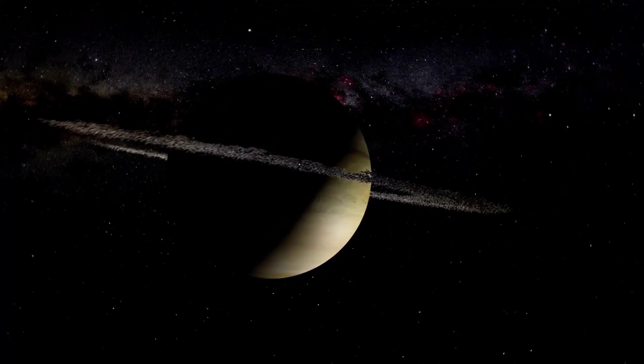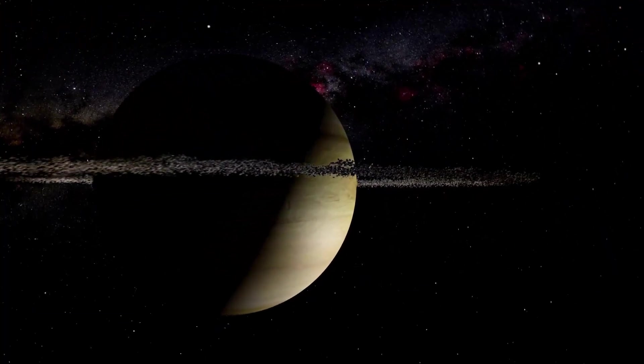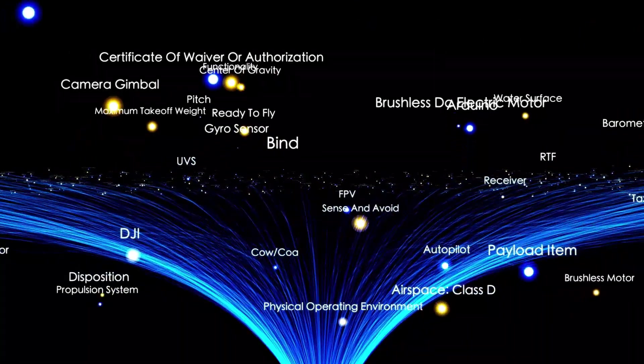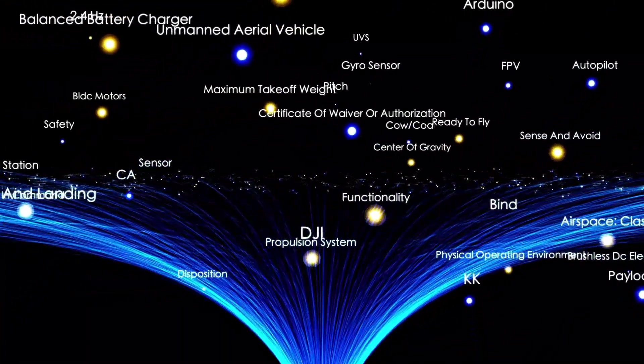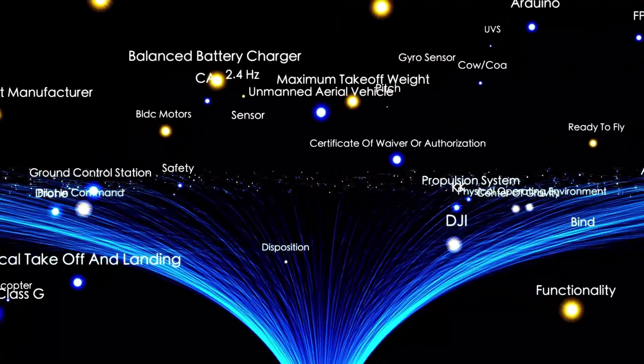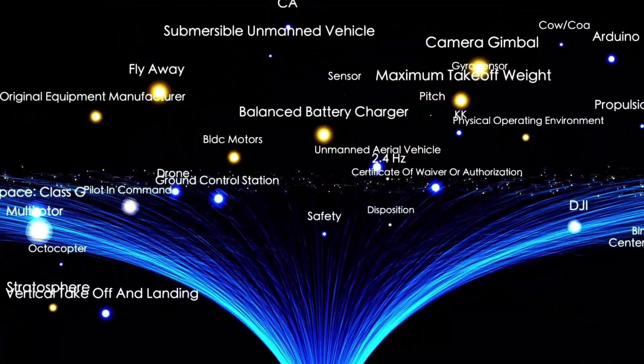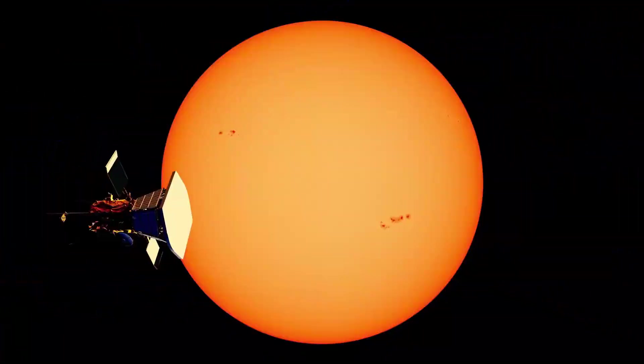These pulsations can be explained by a process called convection, involving the rising of hot gas and the sinking of cold gas. This motion creates waves that travel through the star's atmosphere, causing it to expand and contract.